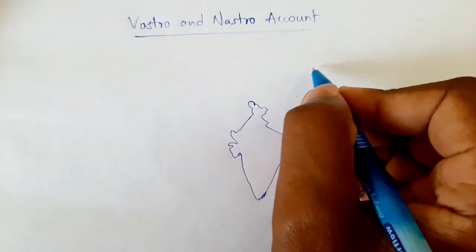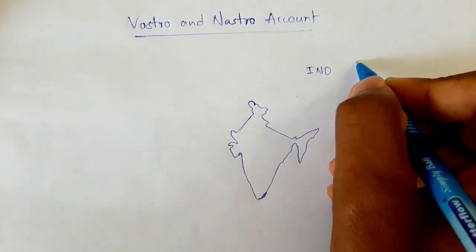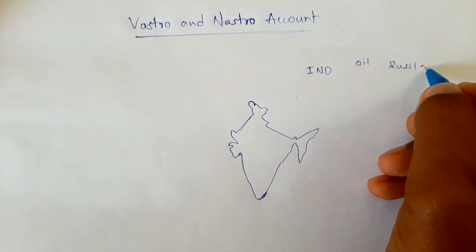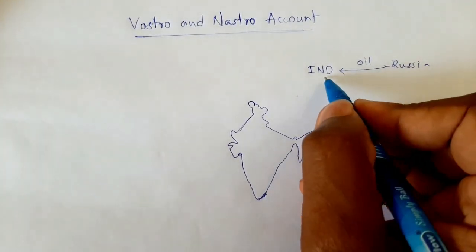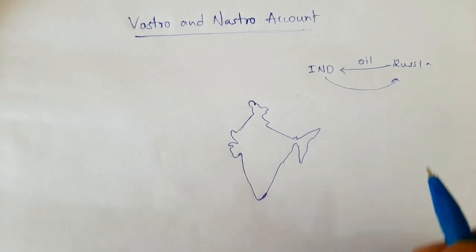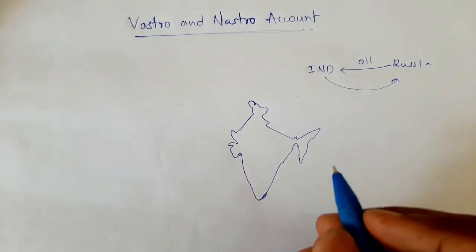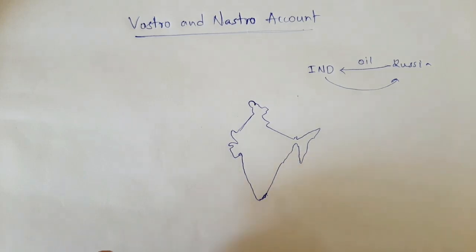Let's assume India is buying oil from Russia — that means India is importing oil from Russia. Now India has to pay for this. This is the situation where Vostro and Nostro accounts come into play. India has to pay Russia, but Indian importers are not going to Russia to pay directly.